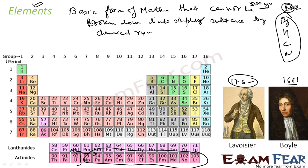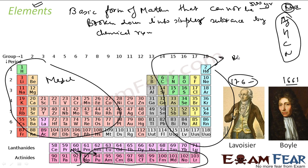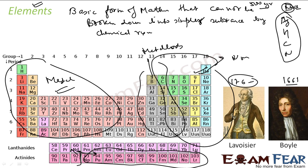Elements can be further classified as metals, non-metals, and metalloids. On the left-hand side of the periodic table we have metals, on the right-hand side we have non-metals, and somewhere in the middle we have metalloids — for example, silicon. This definition of elements came in the 1700s, meaning most advancement in chemistry happened in the last few centuries.